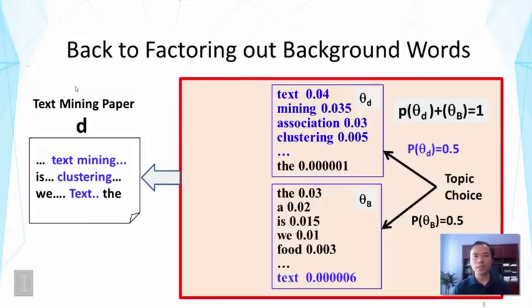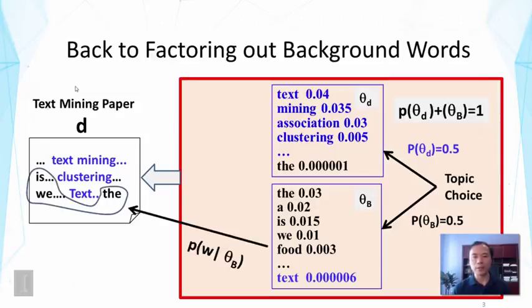So let's first look at our motivation for using a mixture model. We hope to factor out the background words from the topic word distribution. The idea is to assume that the text data actually contain two kinds of words.